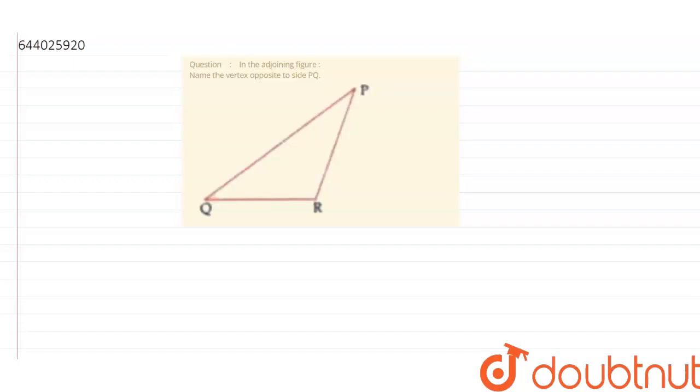Hello friends, so today our question is from properties of triangle. The question is: in the adjoining figure, name the vertex opposite to the side PQ.